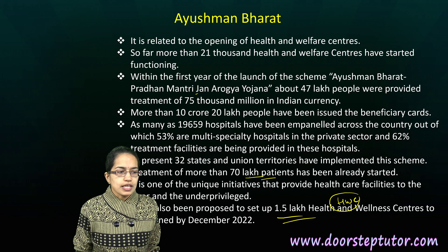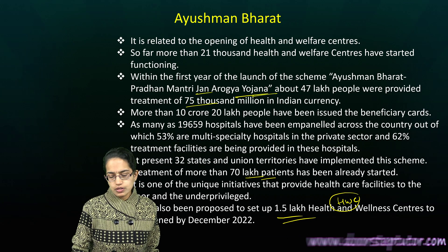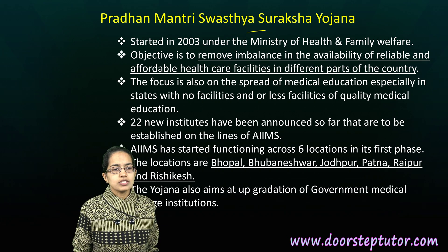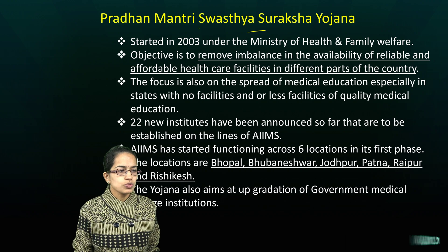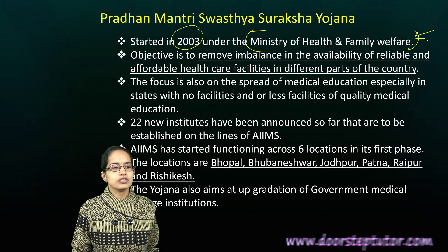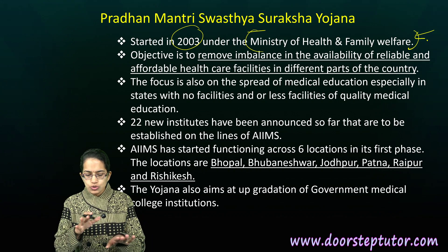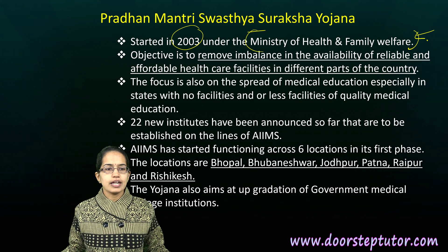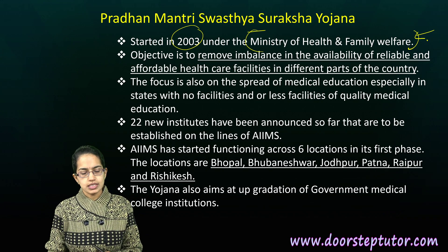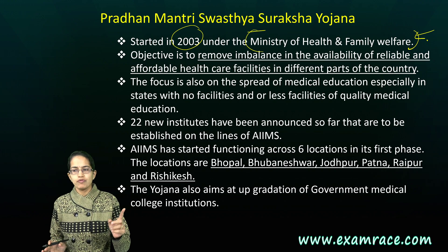We are also focusing on Pradhan Mantri Jan Arogya Yojana, which is providing treatment to nearly 75,000 millions of Indian people. The next is Swasthya Suraksha Yojana, started in 2003 by the Ministry of Health and Family Welfare. Its idea is to remove imbalance between affordable healthcare services that exist across the nation and to spread medical education far and wide.